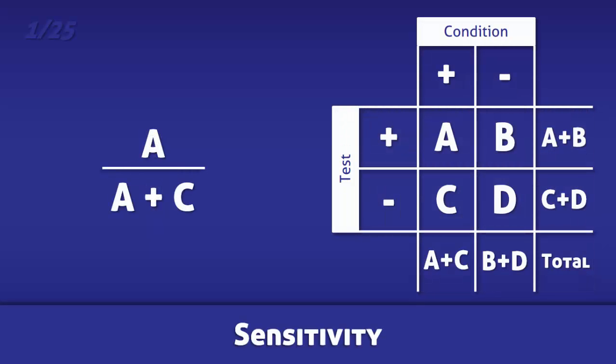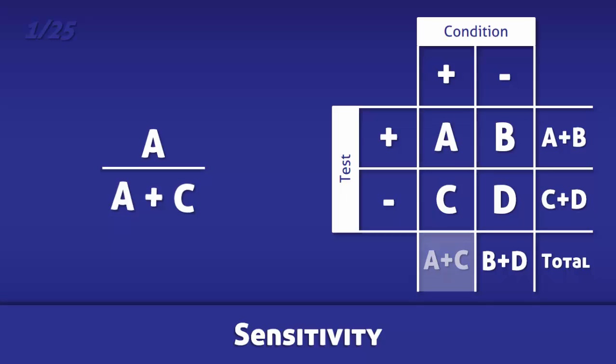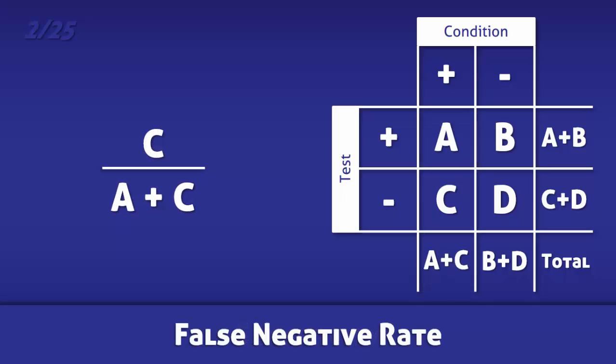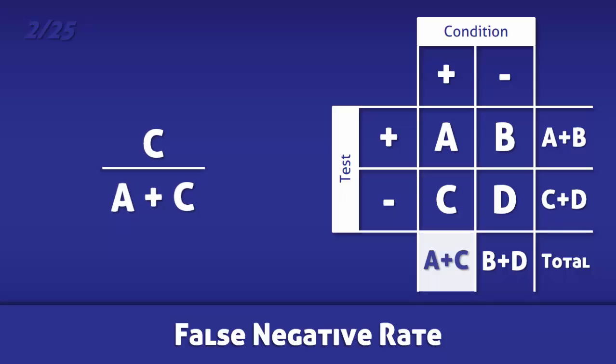For sensitivity, divide the number of true positives by the total number of people with the condition. For the false negative rate, divide the number of false negatives by the total number of people with the condition.